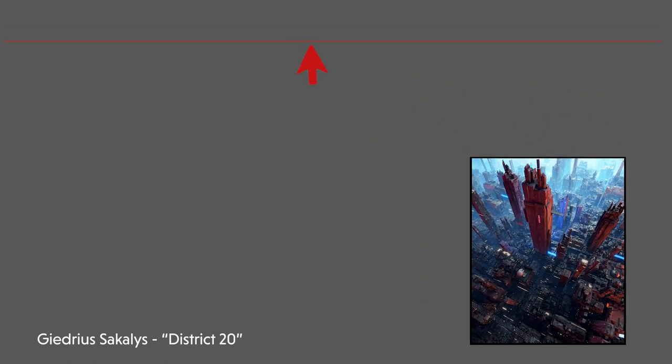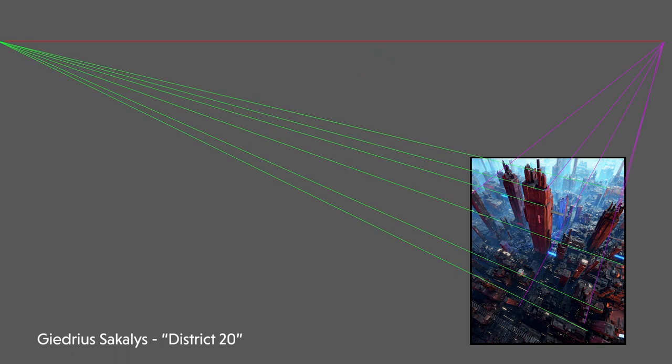Here the horizon line is way above the frame. Here's the x and z axes spanning out to their respective vanishing points. And the y-axis meets down here in this dark cluster of buildings.